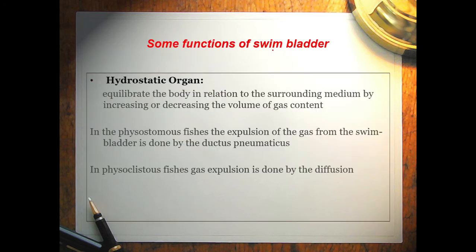Some functions of the swim bladder: it works as a hydrostatic organ, which equilibrates the body in relation to the surrounding medium by increasing or decreasing the volume of gas. In physostomes fishes, expulsion of gas from the swim bladder is done by the ductus pneumaticus, while in physoclistous fishes, gas expulsion is done by diffusion.